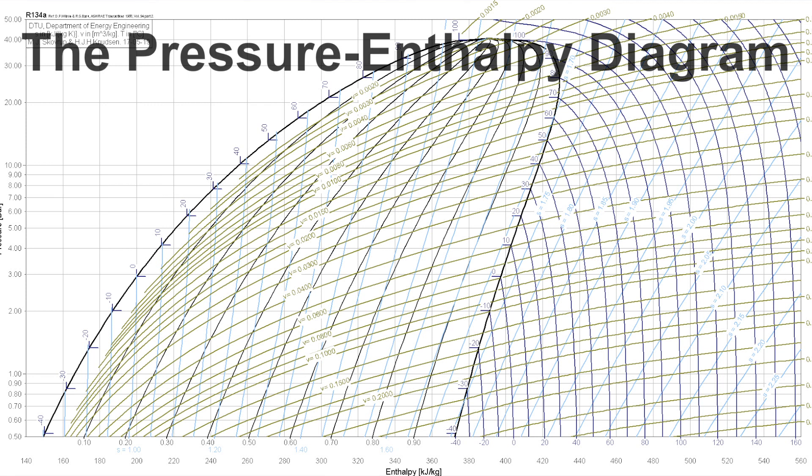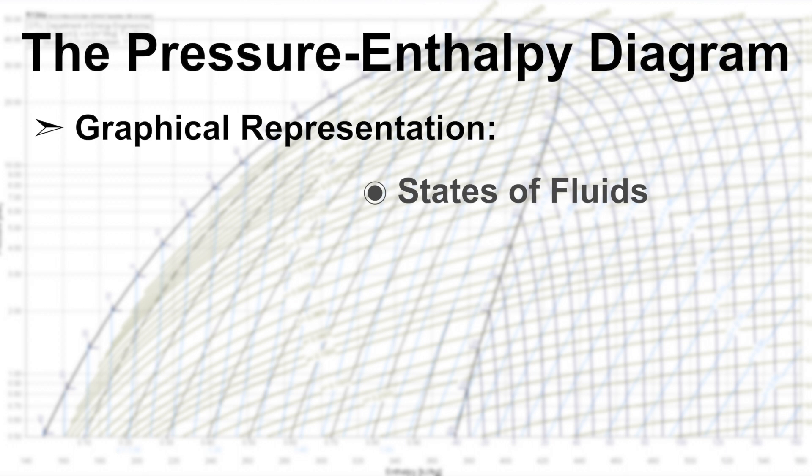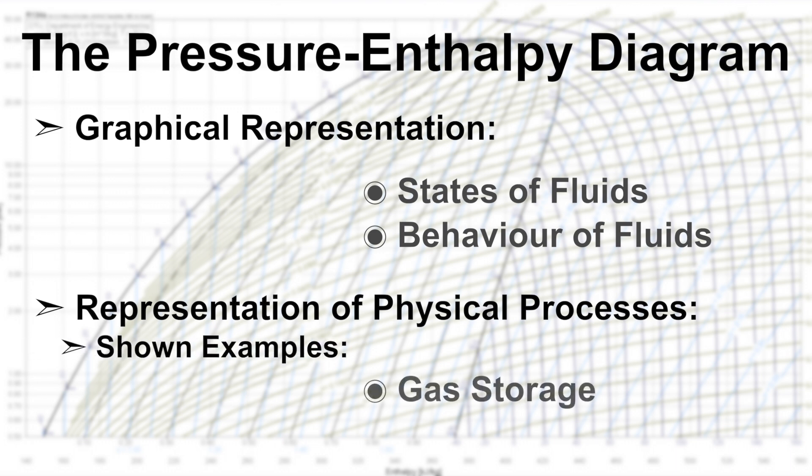A short recap. The pressure enthalpy diagram is a graphical representation of states of fluids. It provides an overview of their behavior under different conditions. Physical processes such as gas storage and evaporation of water can thus be demonstrated in a comprehensible manner.